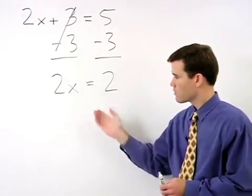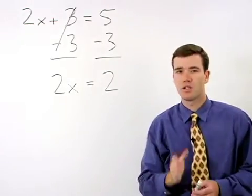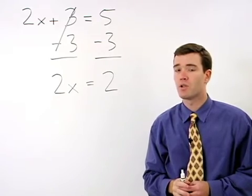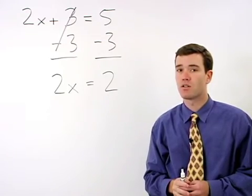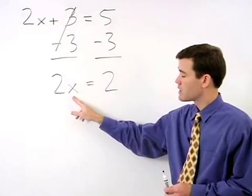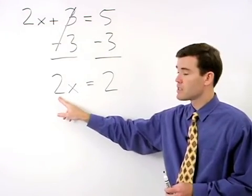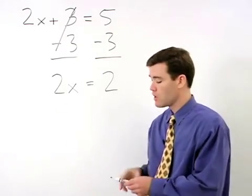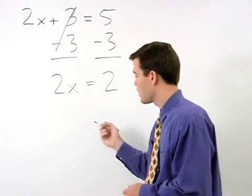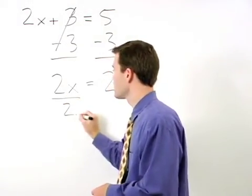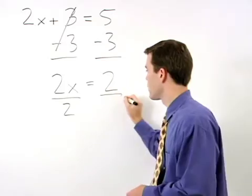And we're left with a situation that is just like the problems in the previous section. To get x by itself, since it's being multiplied by 2, we just divide both sides of the equation by 2.